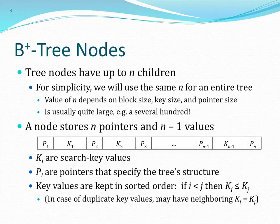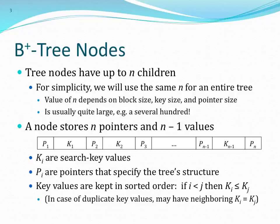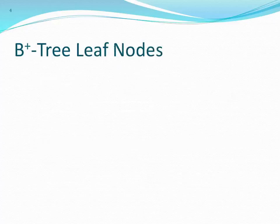Nodes generally follow a structure where we have pointers with keys in between them. These search key values specify what is pointed to by the corresponding pointers. The keys are in increasing order, so K1 ≤ K2 ≤ K3 and so forth. It is possible to have duplicate key values, though for all of the indexes we build in CS122 all of our values will be distinct.